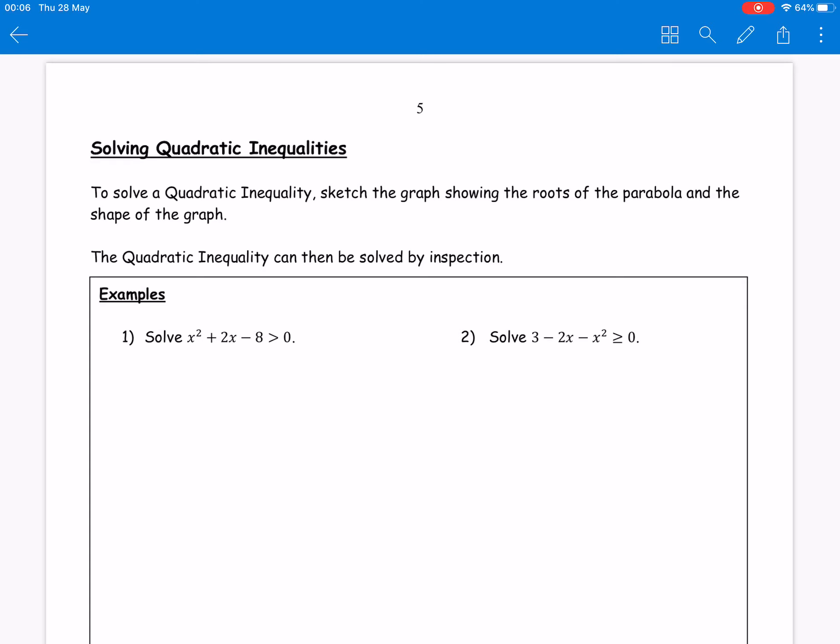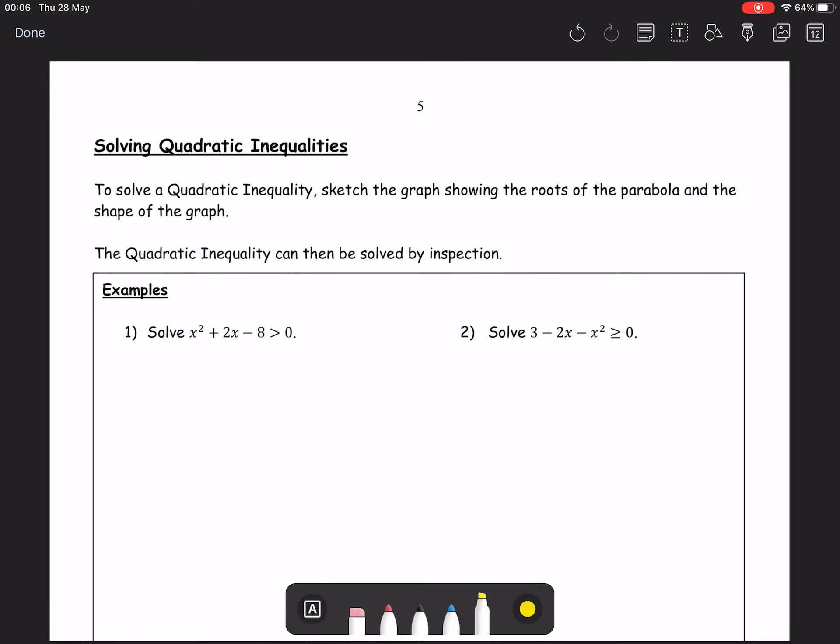Our method is that we'll always look to try and get in a position to sketch the graph. And this graph is very important because it gives you an idea of what exactly is happening at any particular point. Once we've sketched the graph, then we will look to try and solve by inspection, i.e. by looking at the graph and making a judgment.